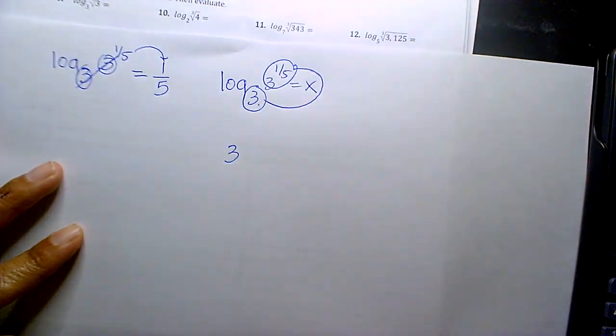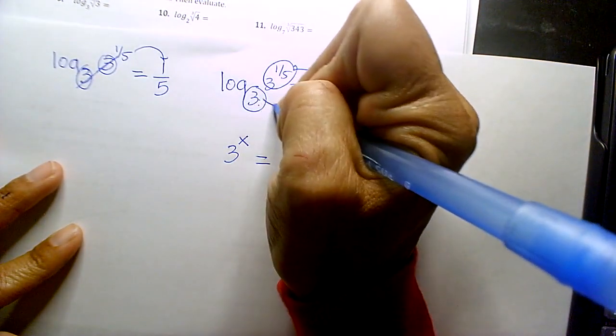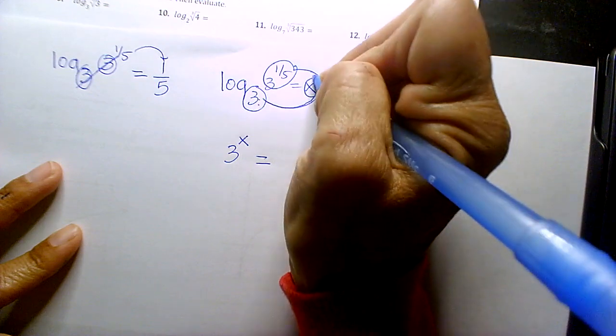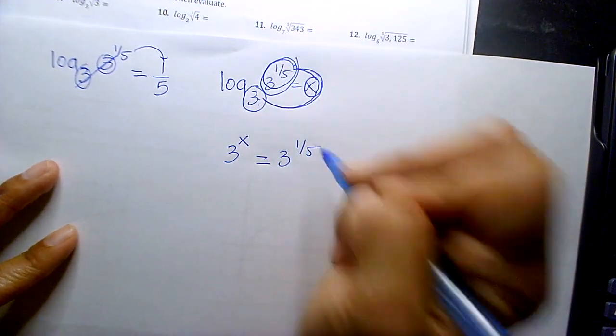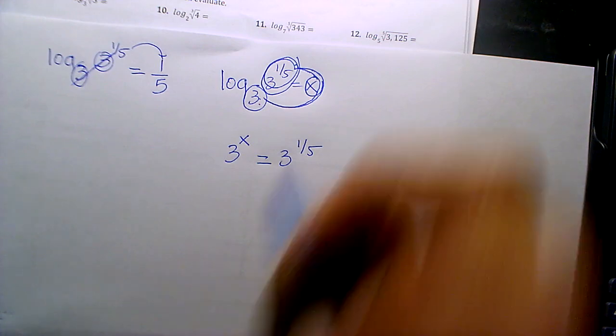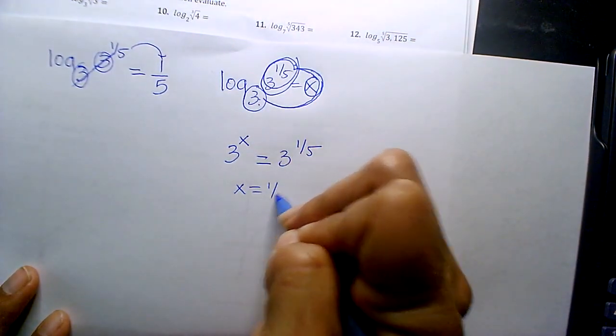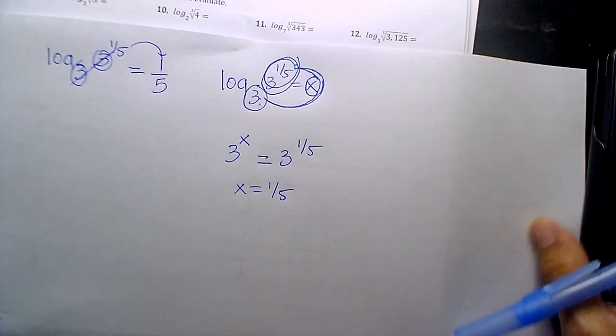So 3 to the x equals, and then whatever the argument is. What's x? How do you make them equivalent? One-fifth, right? So x is one-fifth. If you even put it in exponential form, even if we said no calculator, you should have been able to do it by rewriting it into exponential form.